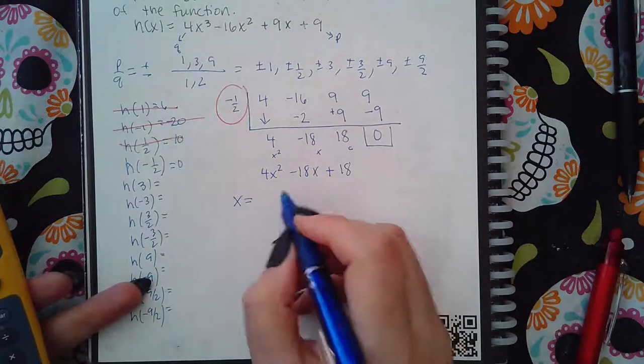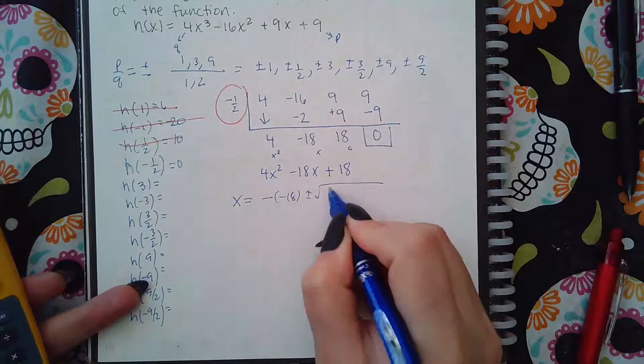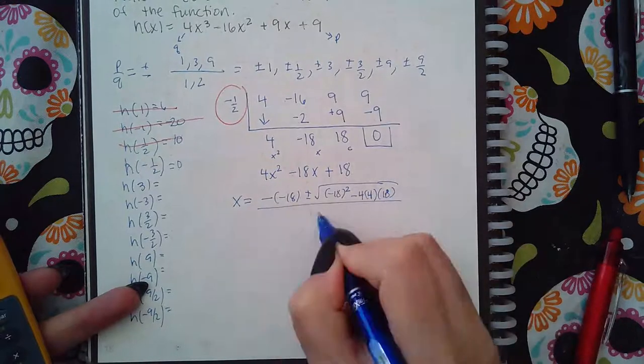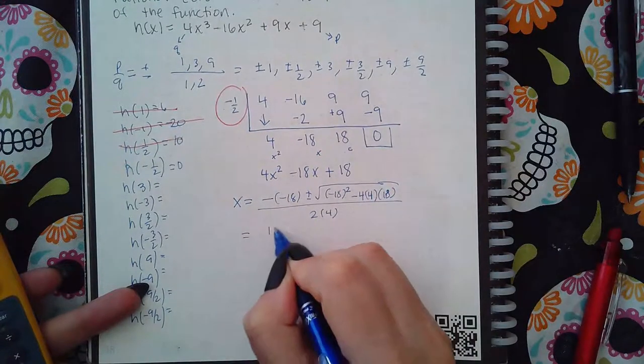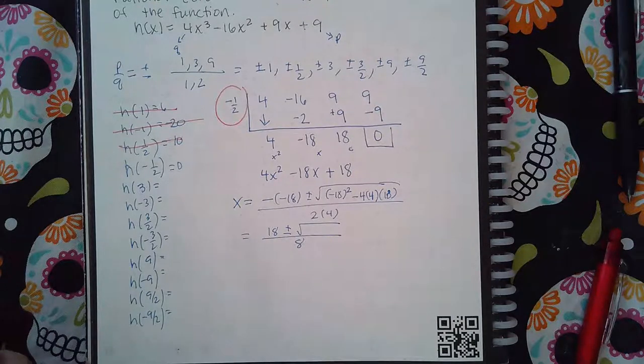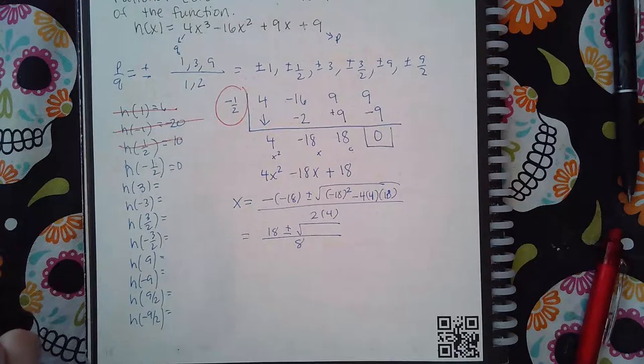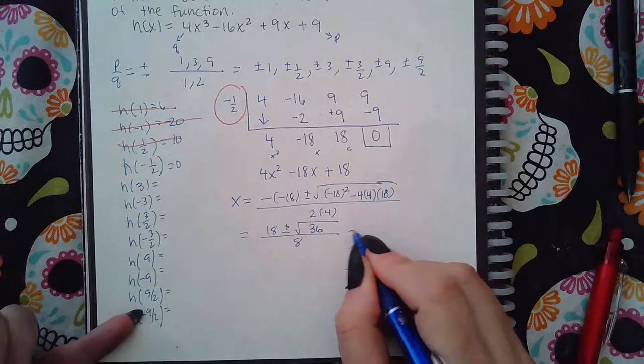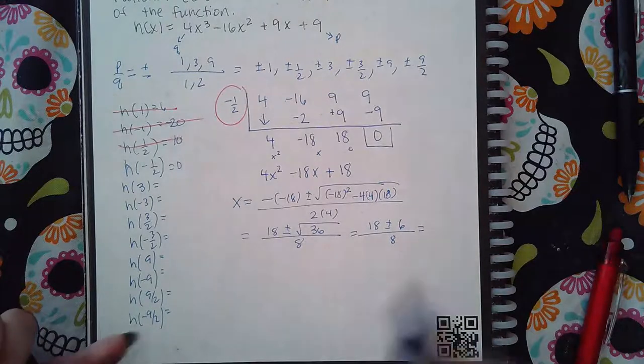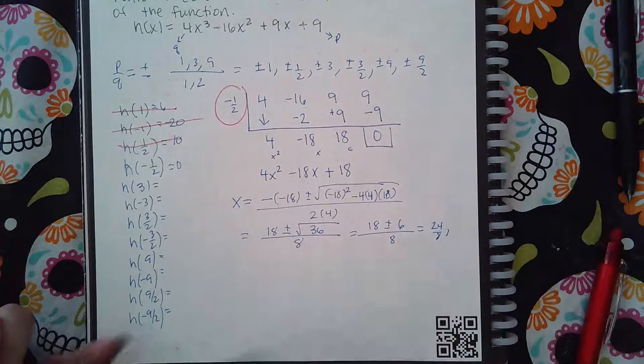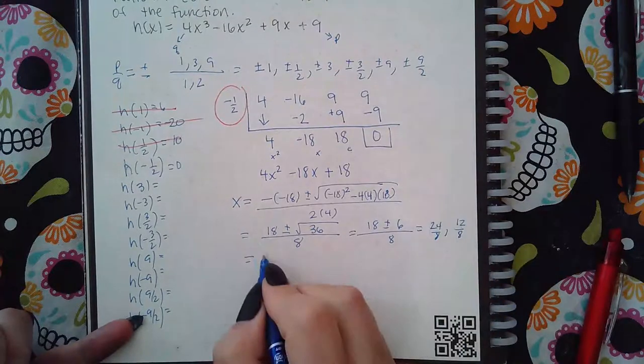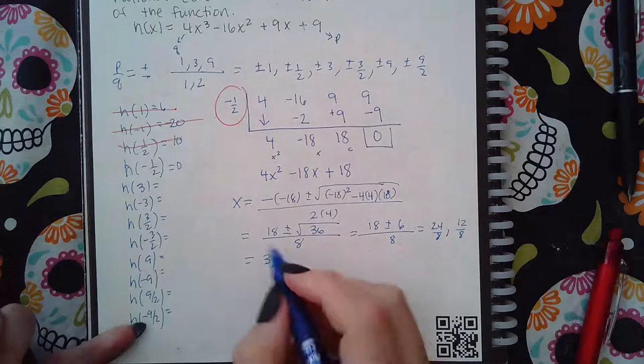So I'm going to say x equals negative b plus or minus the square root of b squared minus 4ac all over 2a. So I get positive 18 plus or minus the square root of something over 8. And I get 36. So I get 18 plus or minus 6 over 8, which is 18 plus 6 is 24 over 8. And 18 minus 6 is 12 over 8. 24 over 8 reduces to 3. And 12 over 8 reduces to 3 halves.